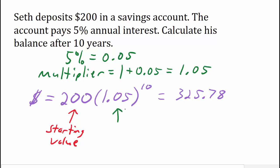The 200 is what he started with. The 1.05 is the multiplier. We got that by adding 1 plus .05. And the exponent, the 10, that's the number of years.